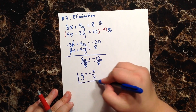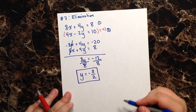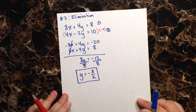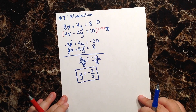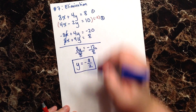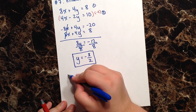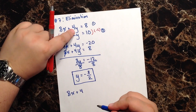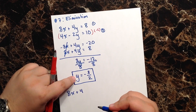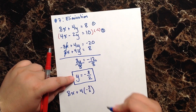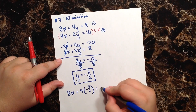Now that I've solved for y, I can take this value and plug it back into one of the original equations to solve for x. Let's plug it into the first equation: 8x plus 4 times negative 3 halves equals 8.